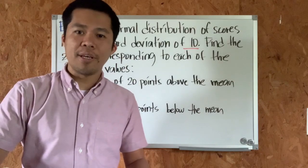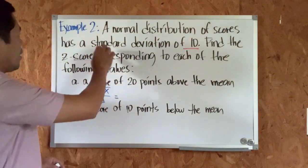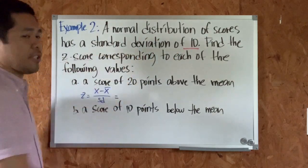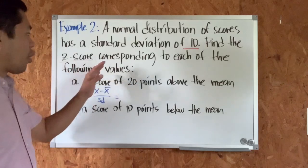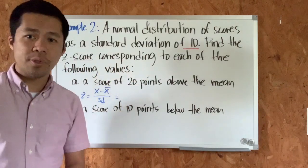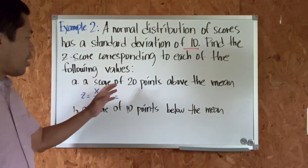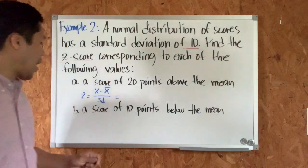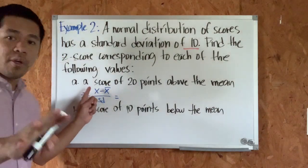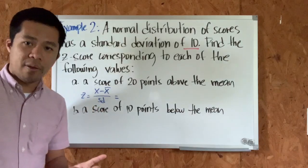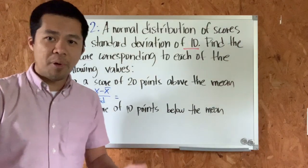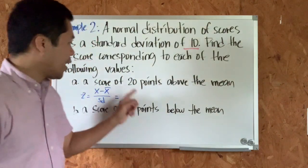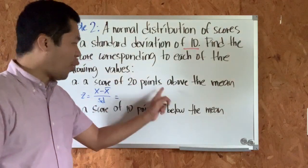Let's proceed to the second example. A normal distribution of scores has a standard deviation of 10. Find the z-score corresponding to each of the following values. For letter a: a score of 20 points above the mean. If you remember, the formula for the z-score is the observation minus the mean divided by the standard deviation. Here we don't know the value of the mean.